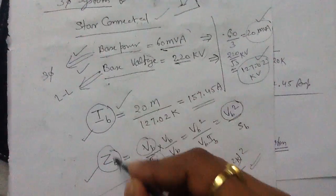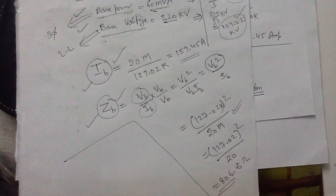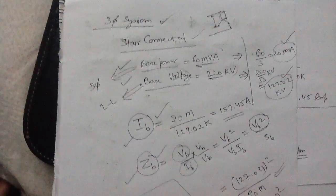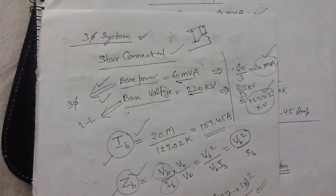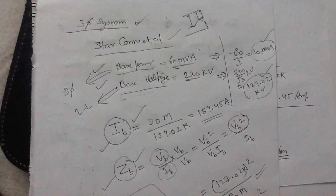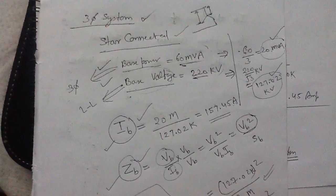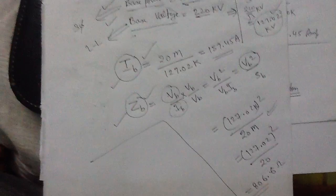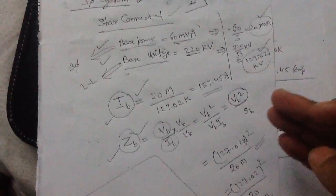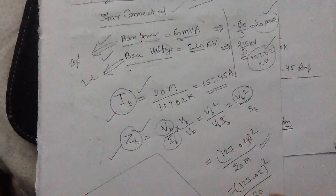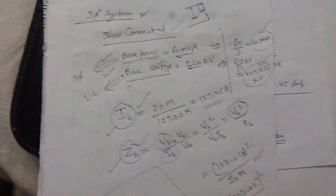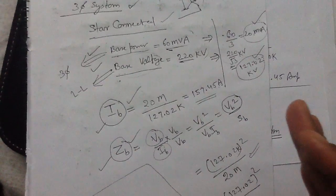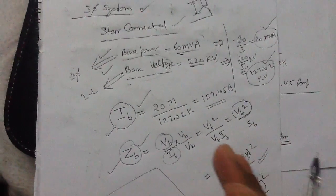Use these two single-phase values to get the base current and the base impedance, and it will never go wrong. The Delta-connected three-phase system will be discussed in the next video. If you are getting confused, use the basic approach: convert the three-phase system to a single-phase basis and use those single-phase values — you will always get the correct answer.